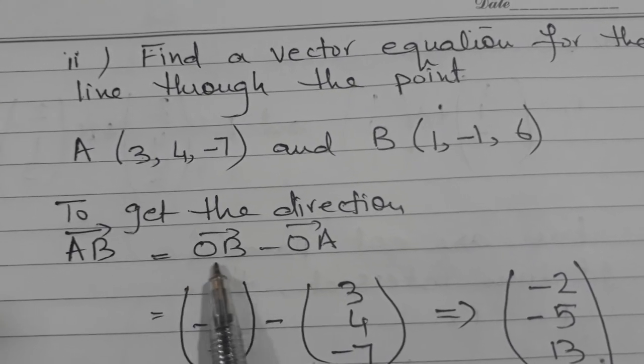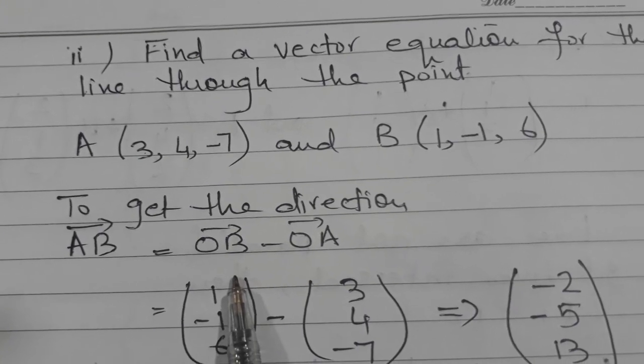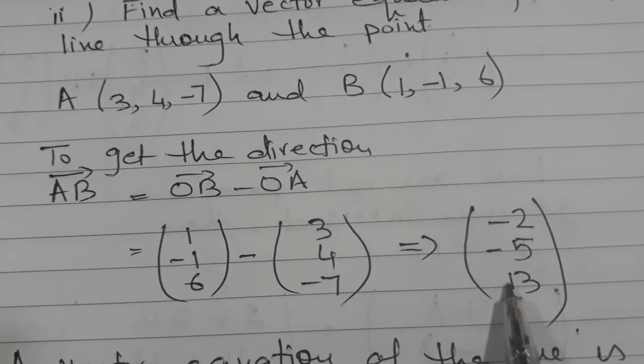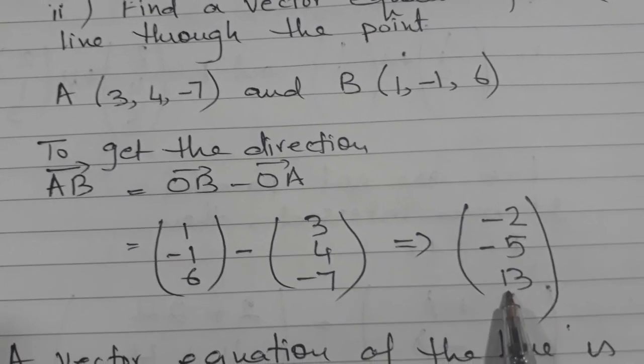And all of you know from the previous concept you have learned in the earlier classes that AB is equals to OB minus OA. And this vector is giving you the direction of the line AB.